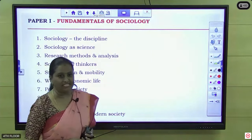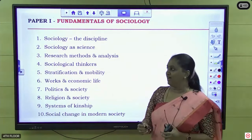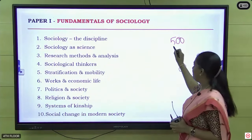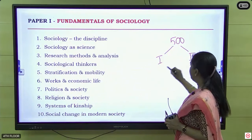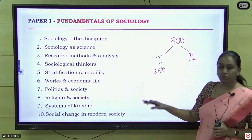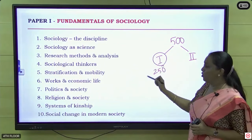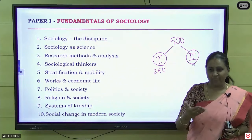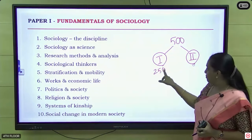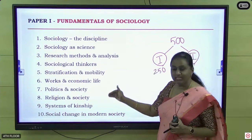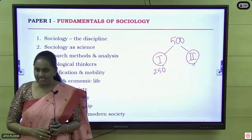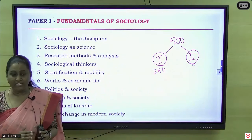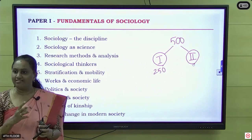If you look into the UPSC Sociology paper, it is 500 marks that comes from this particular paper. Any optional subject is for 500 marks, and this 500 is divided into paper 1 and paper 2, each paper for 250 marks. In sociology, paper 1 deals more with world-level content and paper 2 deals with India-level content. We call it world sociology and Indian sociology. Paper 1 has close to 10 units, with minimum 20 to 30 marks covered from every unit.